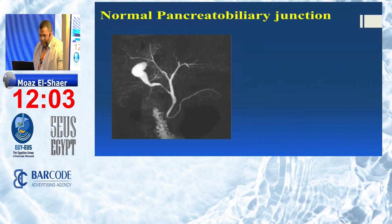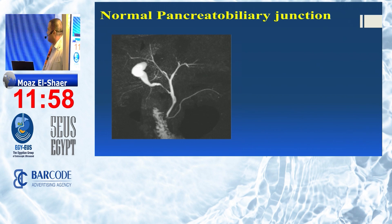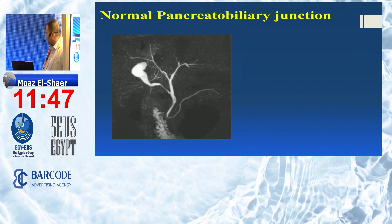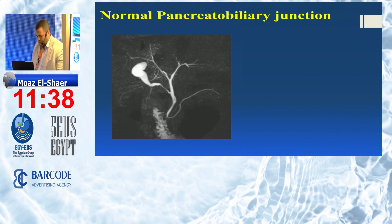To understand pancreatobiliary maljunction, we first need to understand the normal junction. Normally, the pancreatic duct and bile duct join after being inserted within the duodenal muscle layer. This normal junction allows control by the sphincter of Oddi.